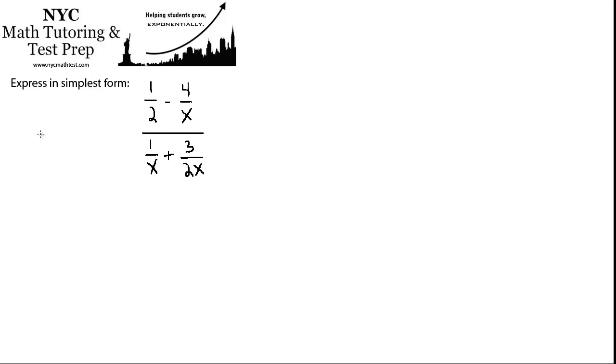So the best common denominator would be 2x because that would contain all of the factors that we need to contain. 2 can go into 2x, x can go into 2x, and obviously 2x can go into 2x.